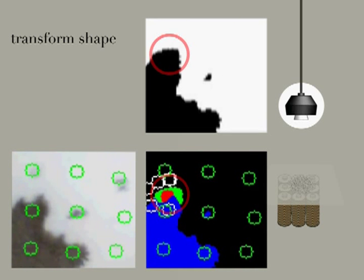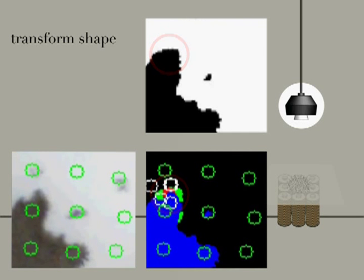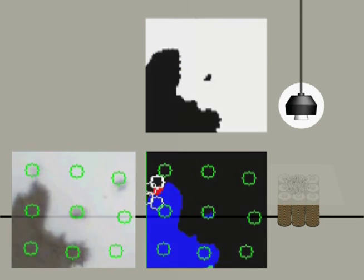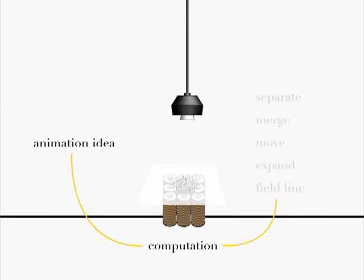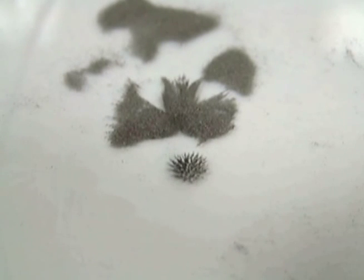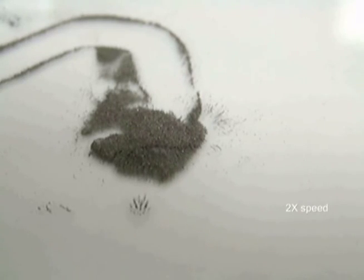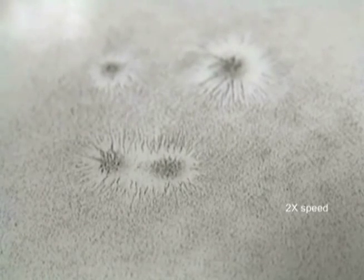Five different manipulation methods form a basic motion library. The computational goal is to analyze the desired animation sequence and to break it down to basic movements: separate, move, merge, expand, or create a pattern using the field lines. Beyond these,